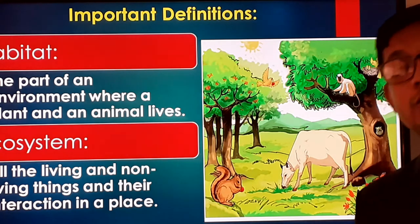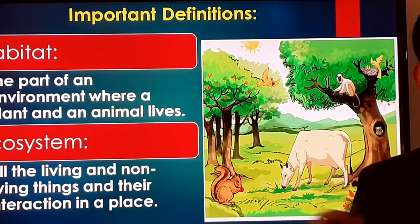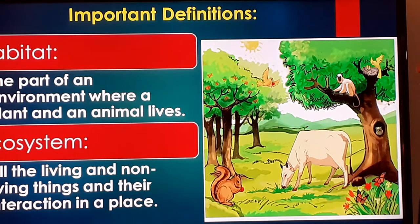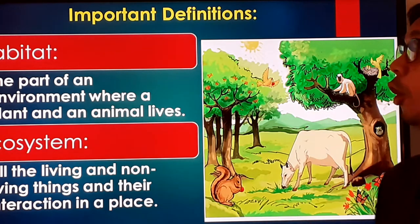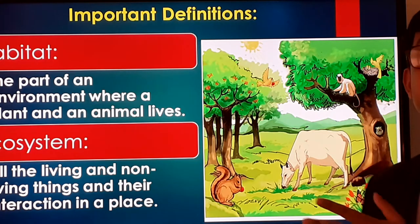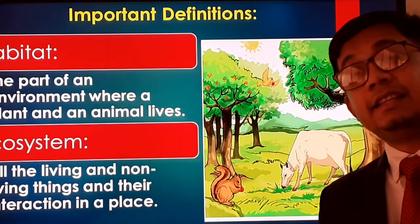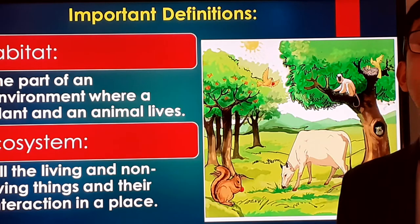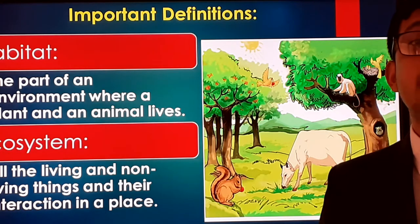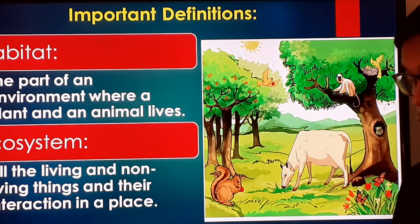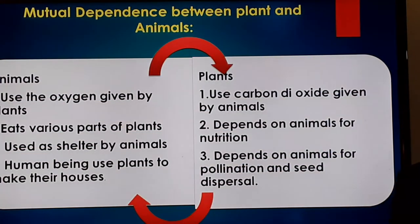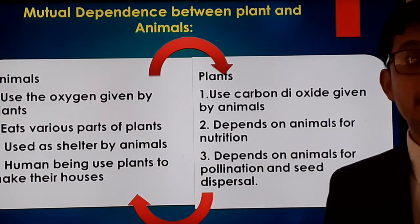What is habitat? The part of an environment where a plant or animal lives is its habitat. We humans live on the upper part of the soil — that is our habitat. Rodents and different insects live under the soil — that is their habitat. So wherever plants, animals, or insects live, that place is known as their habitat.